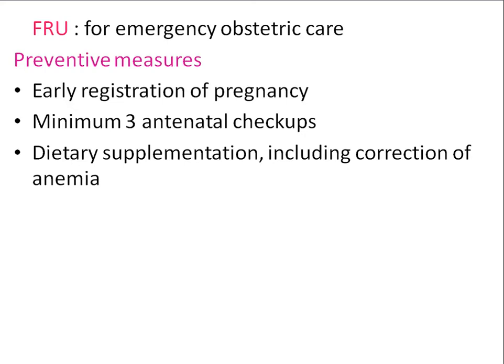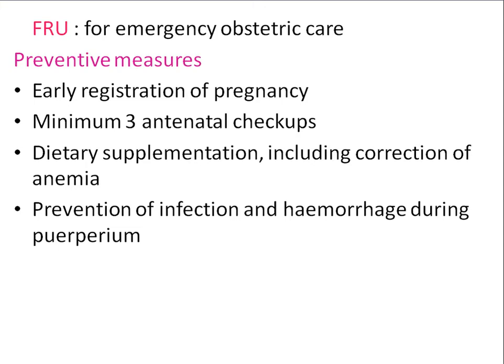If the mother is anemic or malnourished, she requires supplementary food — 400–500 kilocalories and 10–20 grams of protein extra. Educate the mother regarding nutrition. She must take at least 100 iron folic acid tablets throughout her antenatal period: 100 mg of elemental iron and 500 micrograms of folic acid. If the mother is anemic, she requires double the dose.